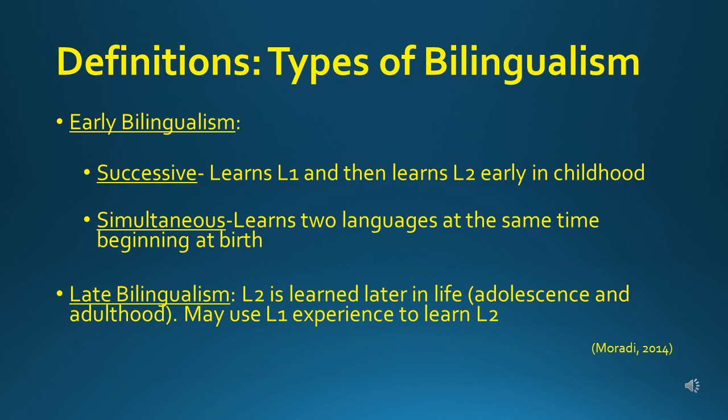In late bilingualism, the individual is learning a new language after the first language is learned, later in life around the adolescent years or adulthood. Learners may even use the knowledge of their first language to learn the second language. This may be the case for many high school or college students required to take a language class — they may use their knowledge of English to help them learn the new language.